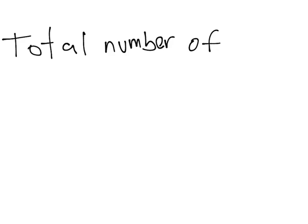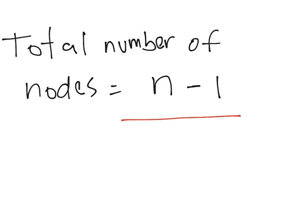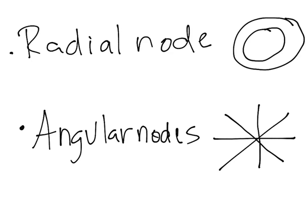The total number of nodes will be equal to n minus one. So if we have a principal quantum number of two, it's going to have one node. And this represents both radial and angular, so it's the total number. In the case it has, let's say, four, it may have two angular nodes and two radial nodes, or any other case.